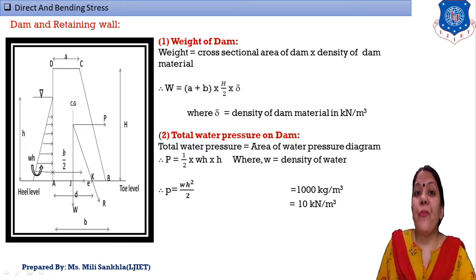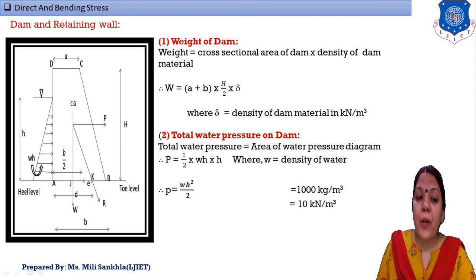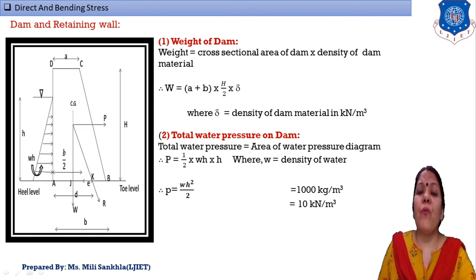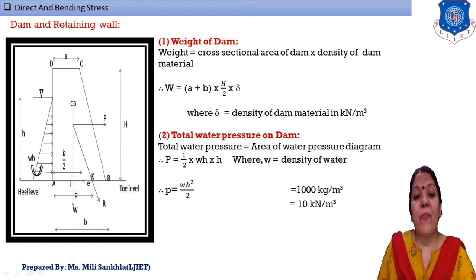First, we find out the weight of the dam, i.e., the self weight W: W = [(a + b) / 2] × H × density, where 'a' = top width, 'b' = bottom width, 'H' = height of dam, and density = density of dam material. This calculation is for one meter length of the pier section.